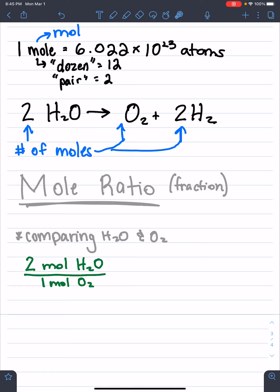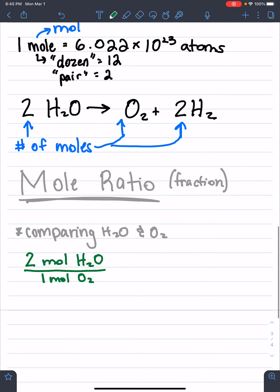Now you could write this fraction in this way, or you could write it the reverse way. When we have one mole of O2, we have two moles of H2O. Either one of these ways will work.